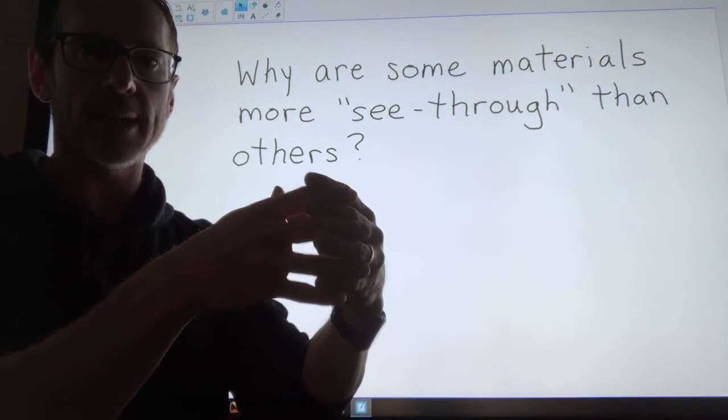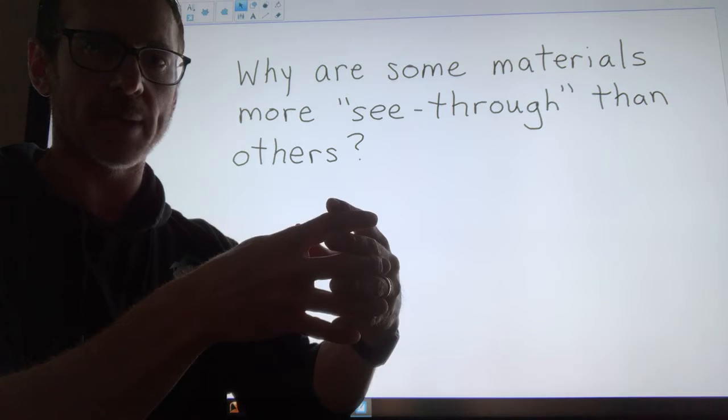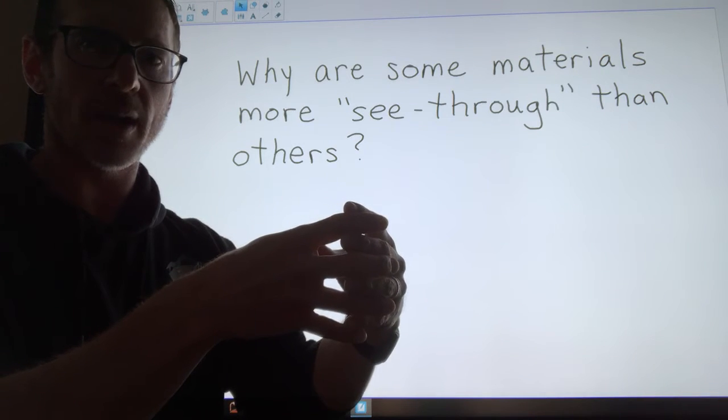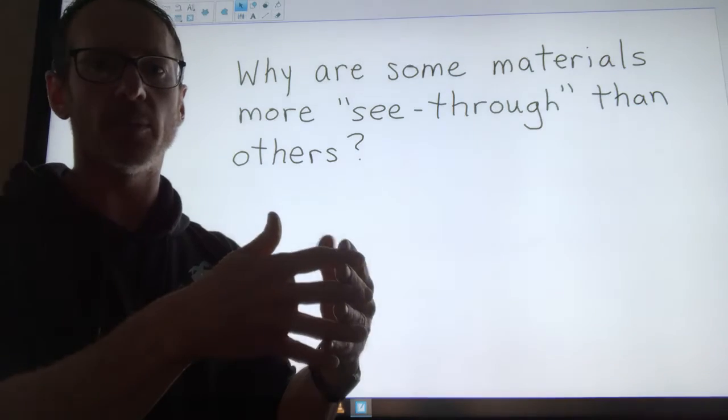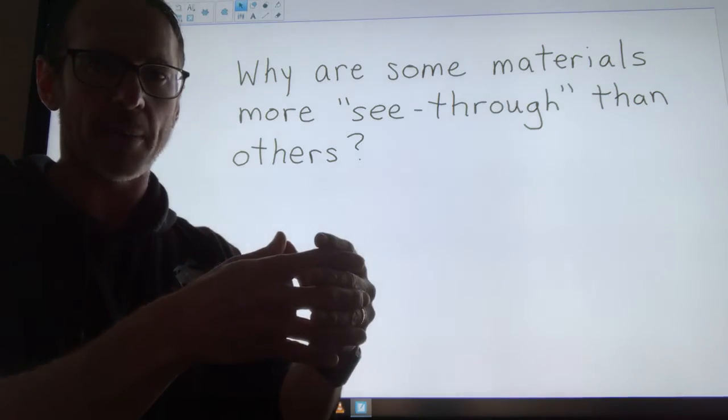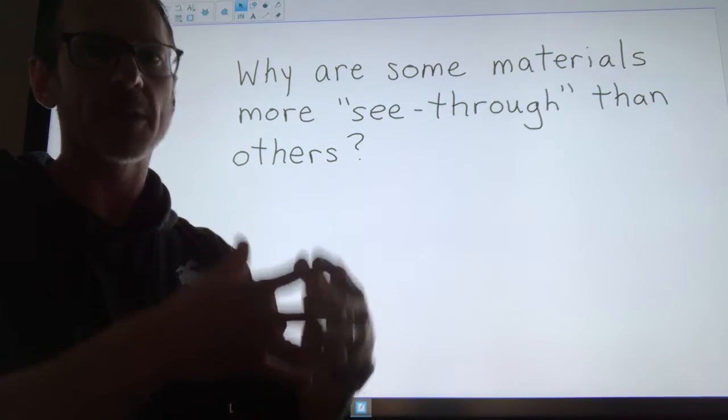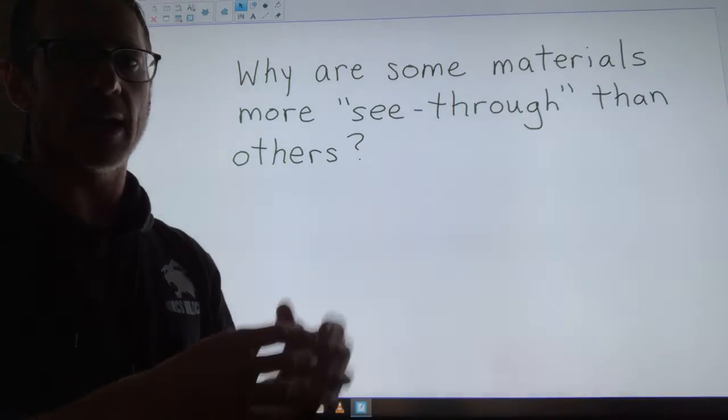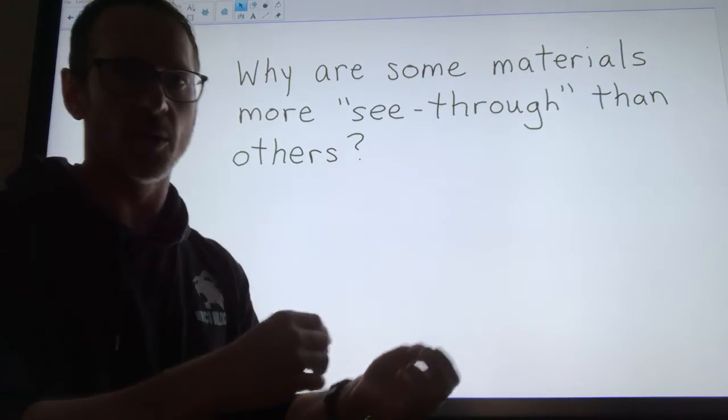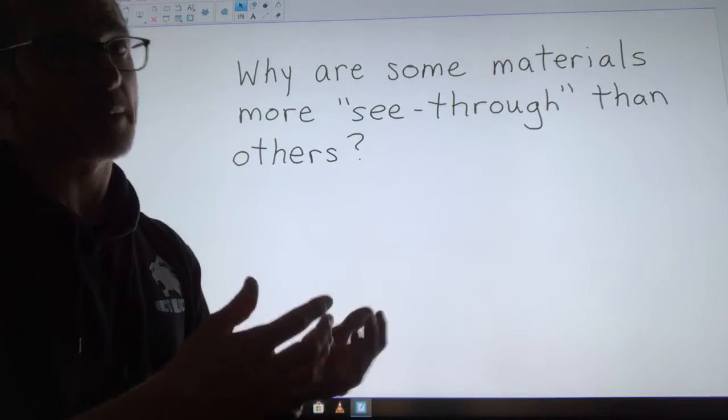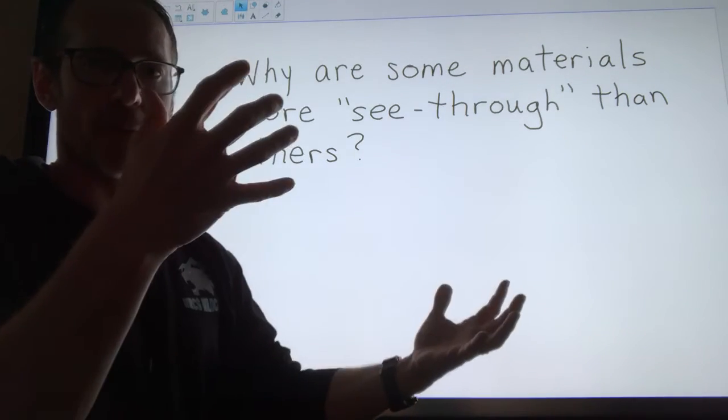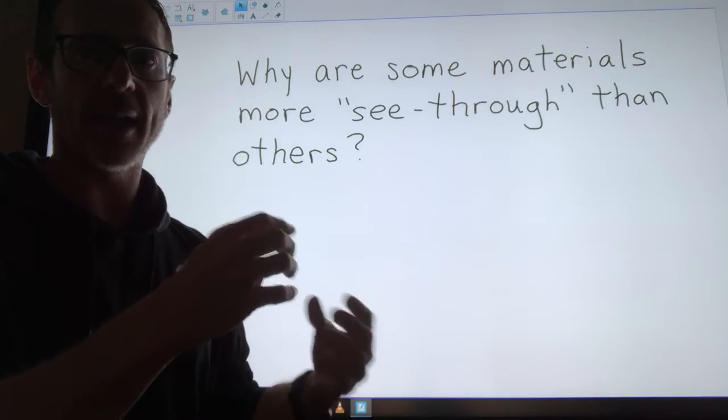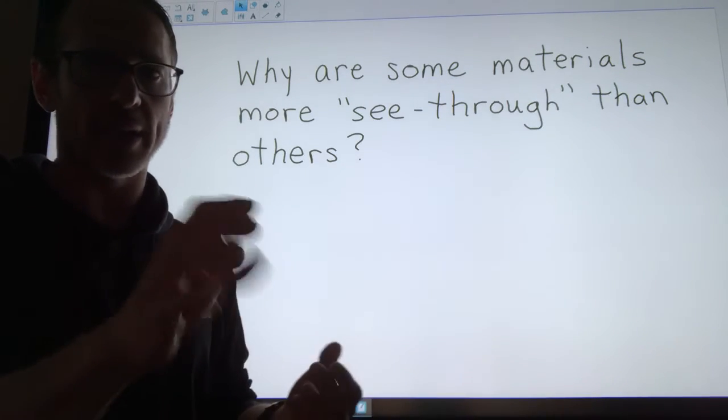Some light is getting through because the molecules are a little further apart. And with translucent materials, some are just a little bit apart and some are quite a bit apart, so translucent things can just let a little bit of light through or they can let a lot of light through. Transparent materials, the molecules are really far apart and so they're not blocking any of the light. They're allowing all the light to go through.